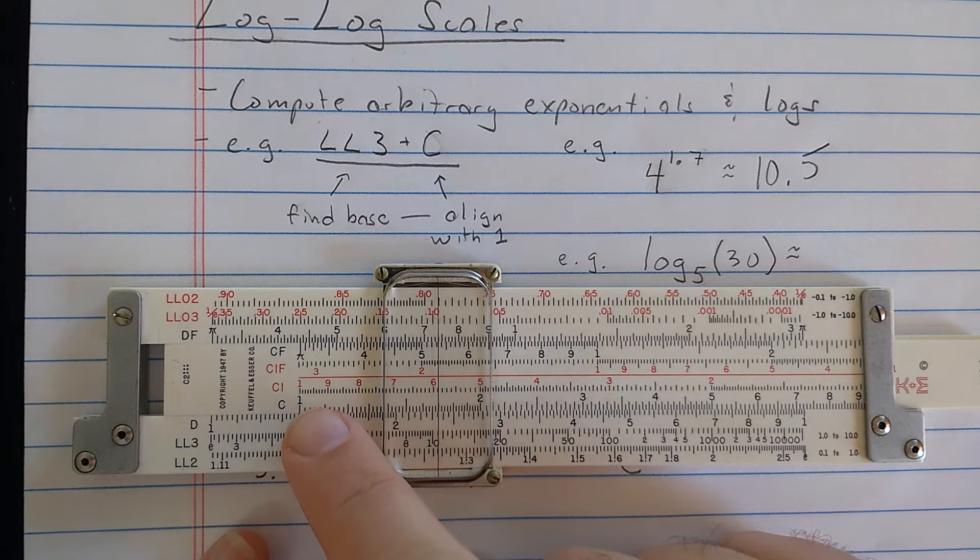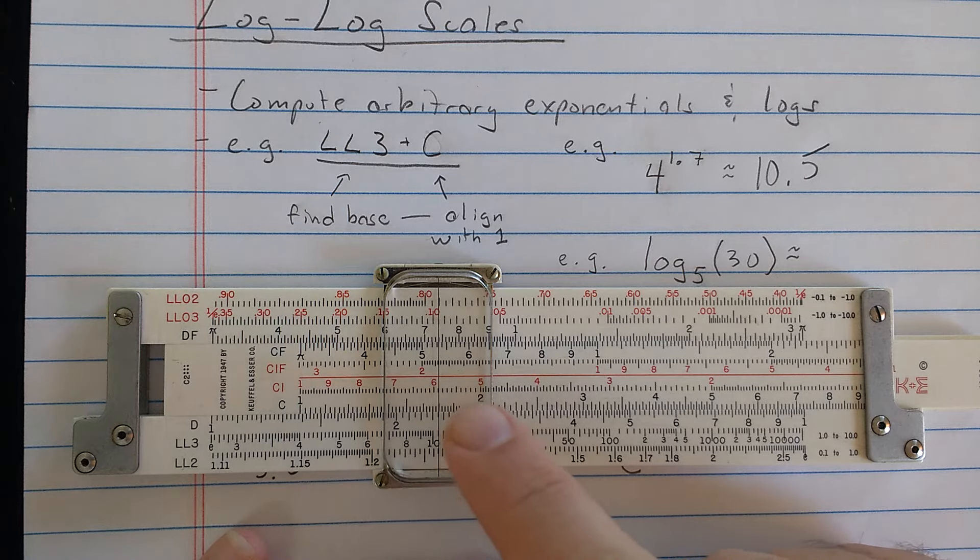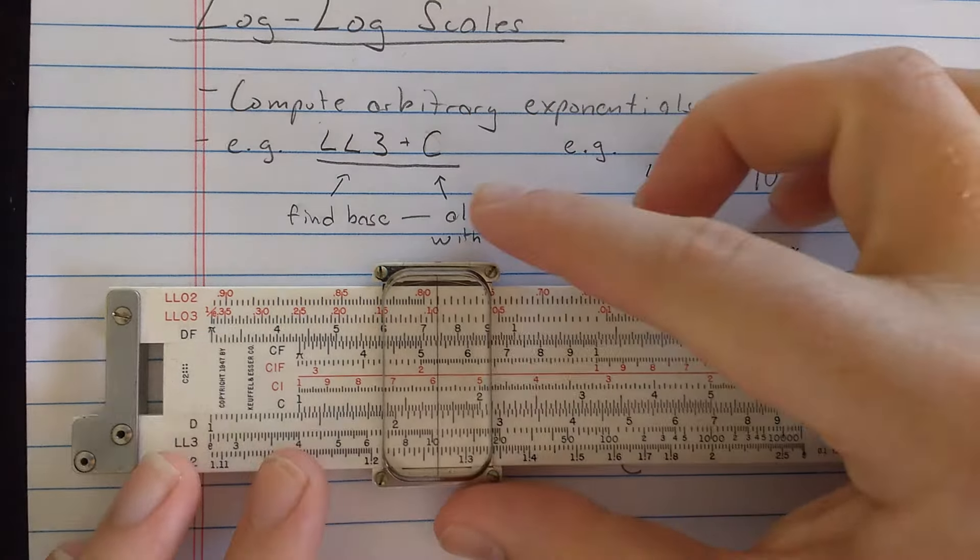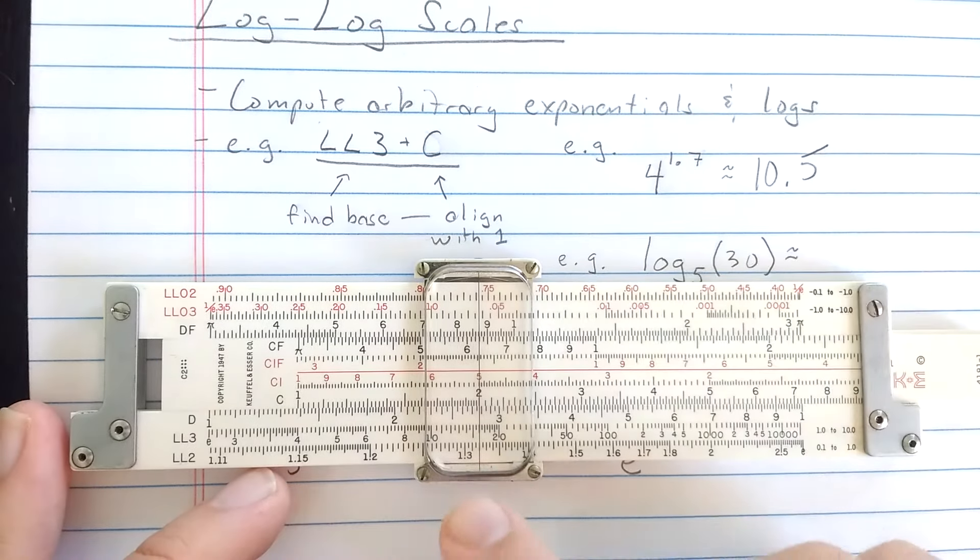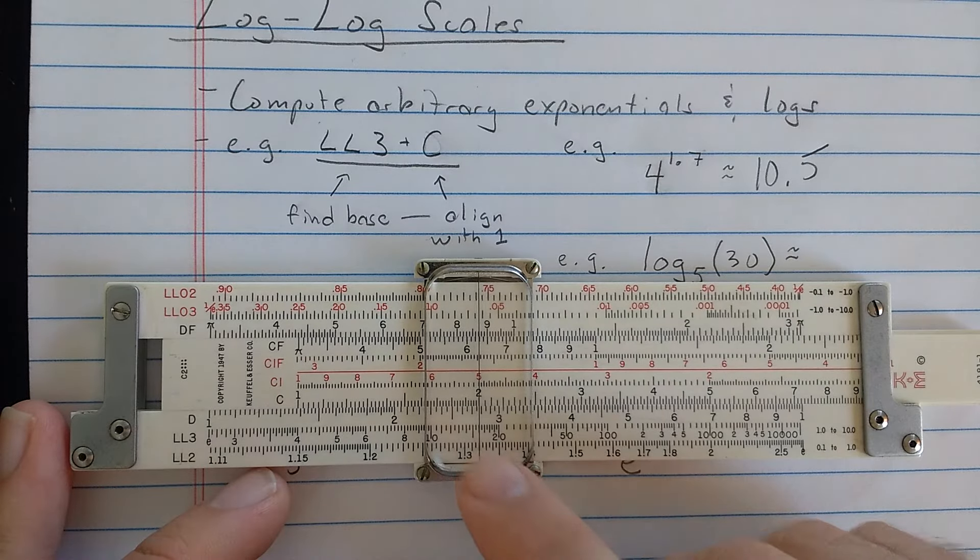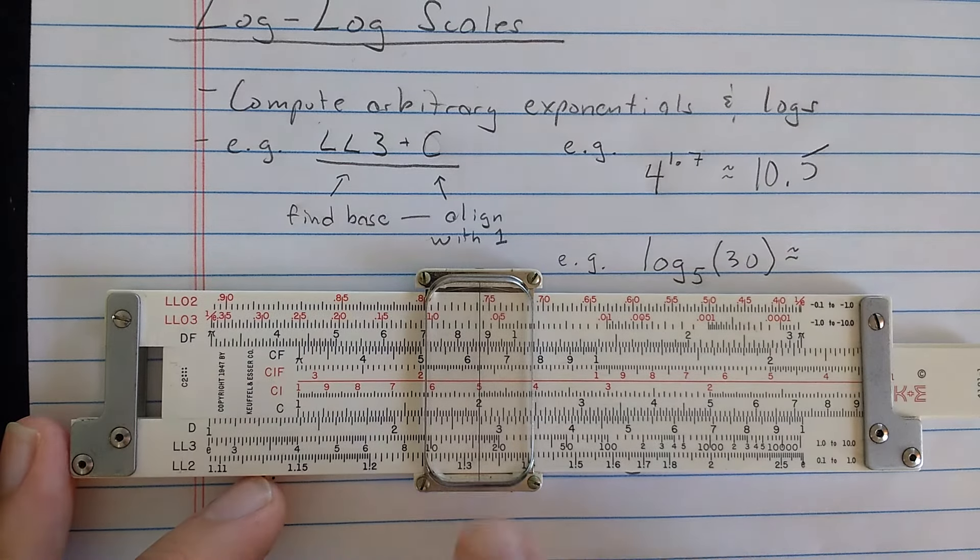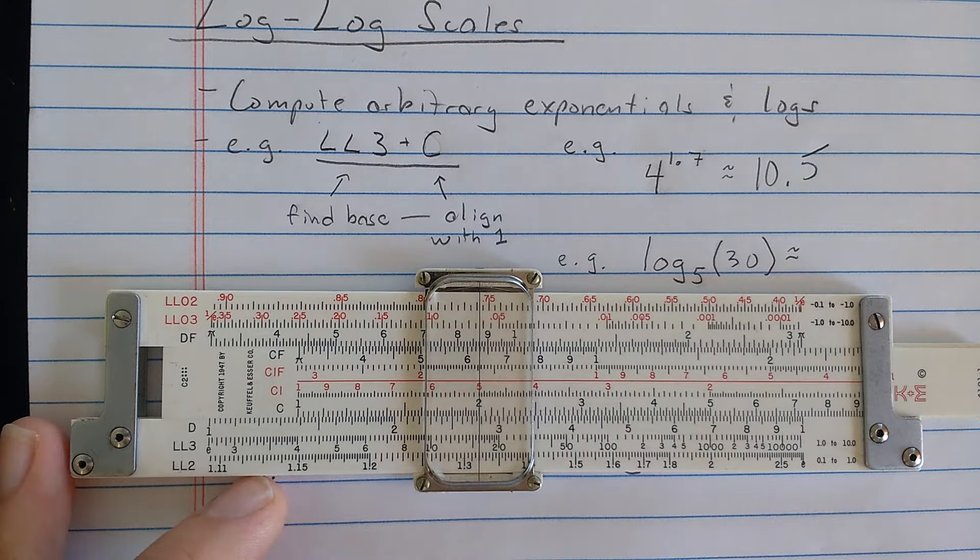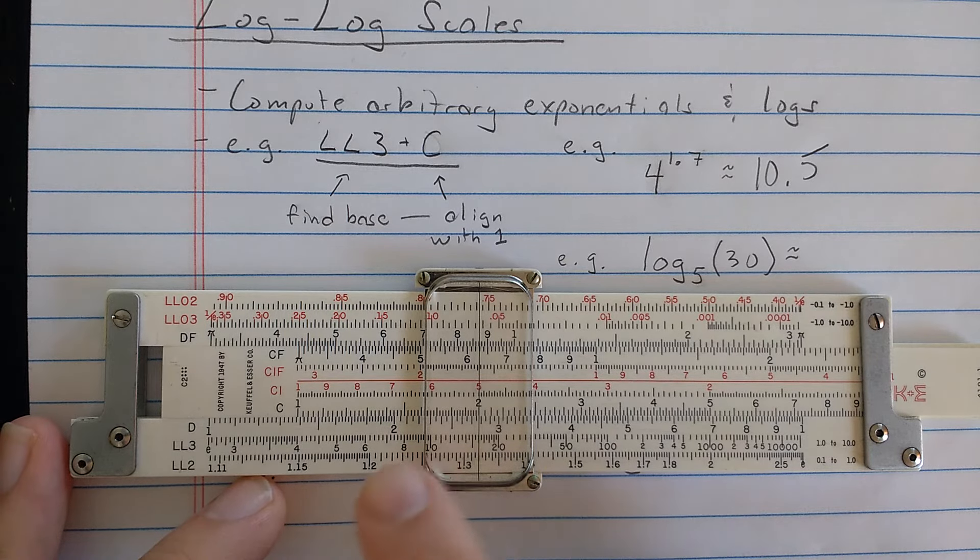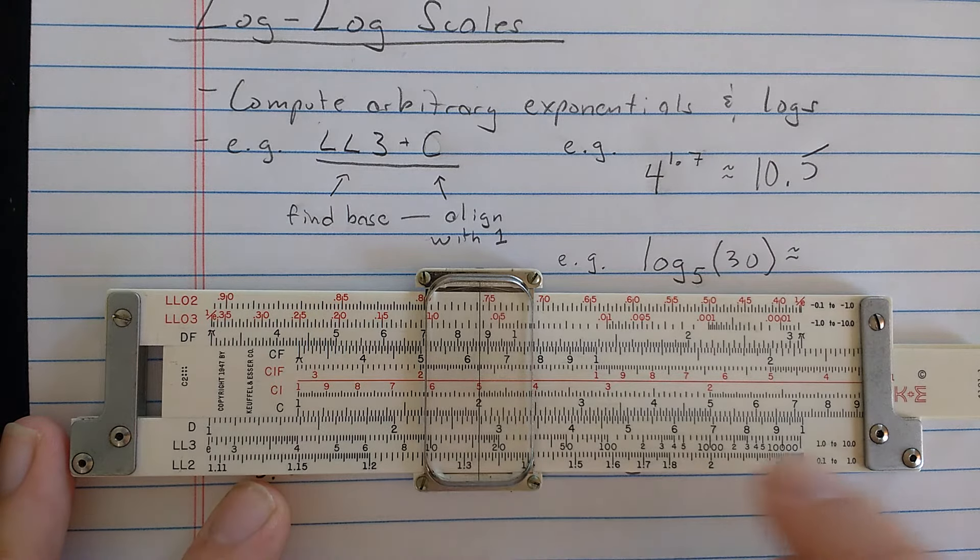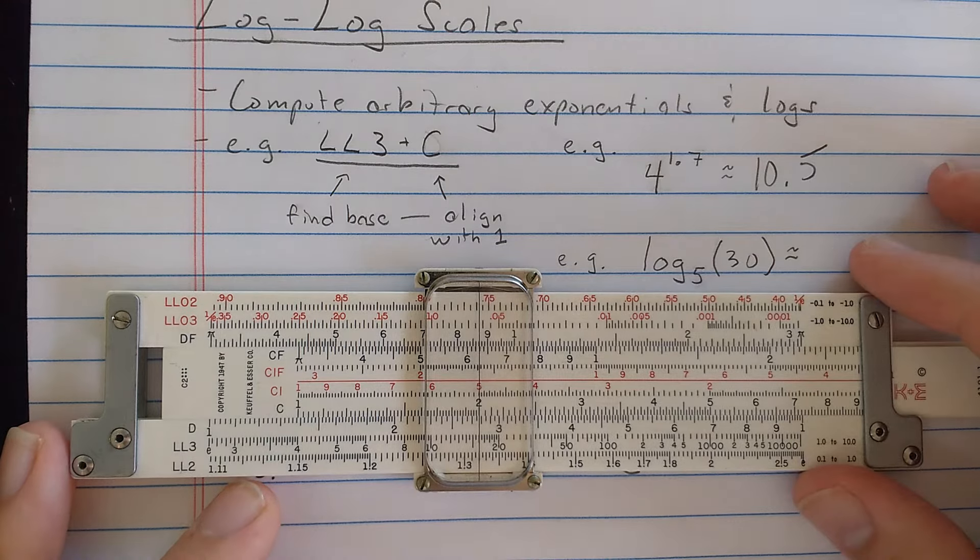Now, what I did was I found the base on the log-log-3 scale, the 4, I aligned that with the 1 on the C scale, then I went out to the exponent that I wanted. You can see if I went out to exponent 2 on the C scale, then it's going to be reading 16 for 4 squared. But unlike using the A or the B scale to compute 4 squared, I can set that cursor anywhere, a little bit to the left, 1 point something, 2 point something, I can pick this arbitrary exponent.